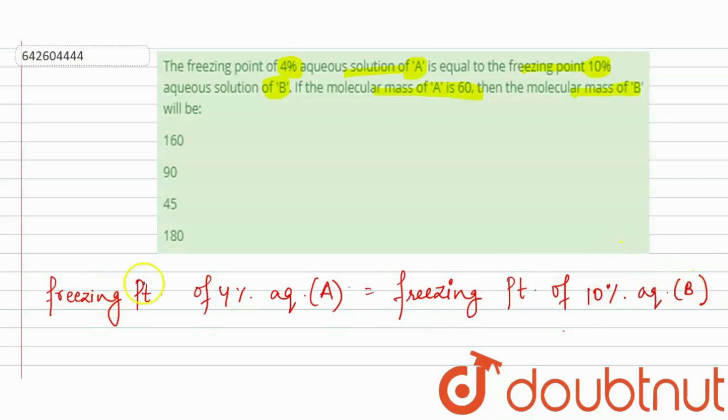If the freezing points are equal, then we can also say that the delta Tf of A is equal to delta Tf of B.